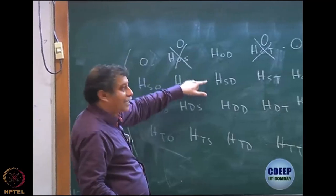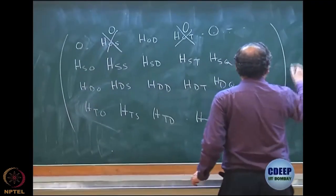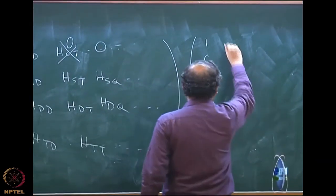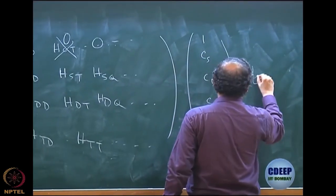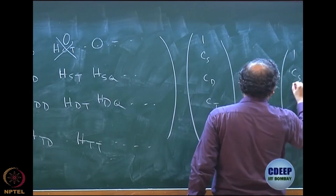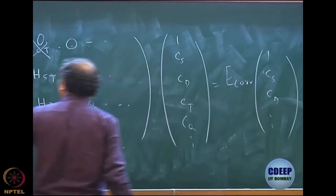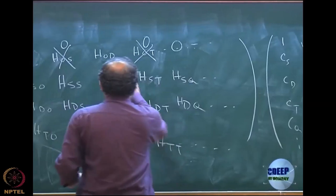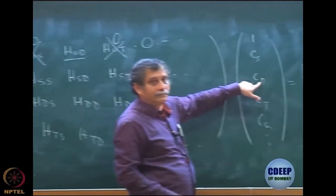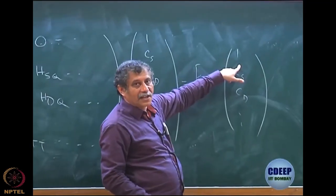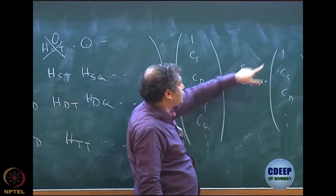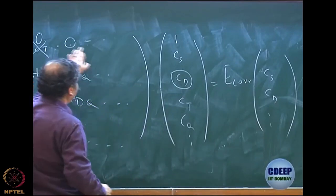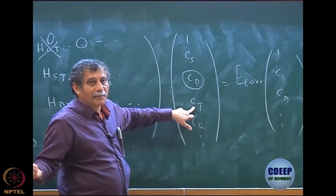So this is your matrix and then you have coefficients 1, Cs, Cd, Ct, etcetera equal to e-correlation times 1, Cs, Cd, etcetera. You can clearly see that when I multiply the first row times the first column, since everything is zero, the only thing that multiplies is H_doubles-O times Cd. So this gives you e-correlation times 1. Your e-correlation depends only on Cd because all other blocks in that first row are zero.